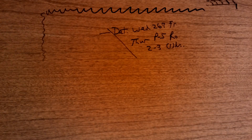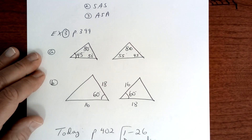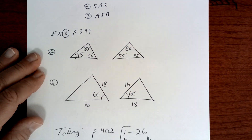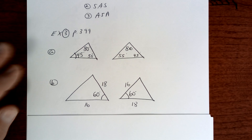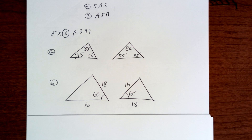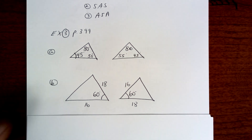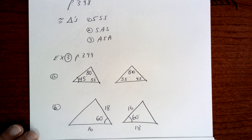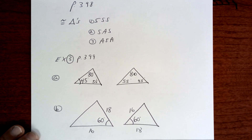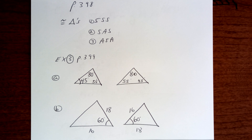Copy down everything you see right here. So we're going to learn three ways — this is on page 398 — three ways to prove triangles are congruent, not similar, but congruent.